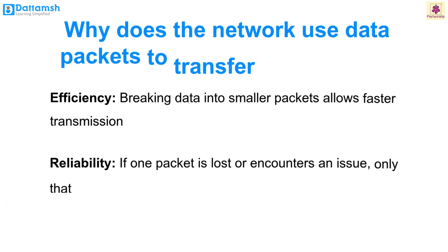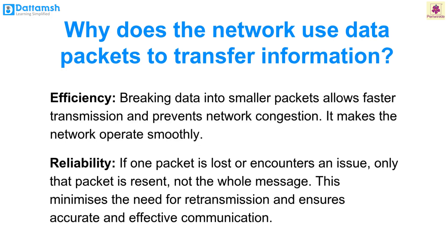Why does a network use data packets to transfer information? Efficiency: breaking data into smaller packets allows faster transmission and prevents network congestion, making the network operate smoothly. Reliability: if one packet is lost or encounters an issue, only that packet is resent — not the whole message. This minimizes the need for retransmission and ensures accurate and effective communication.